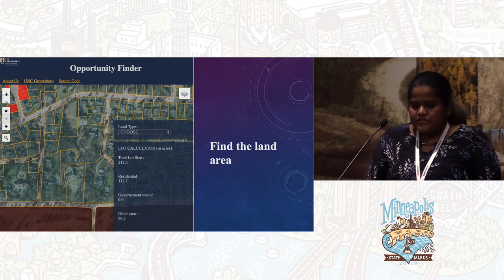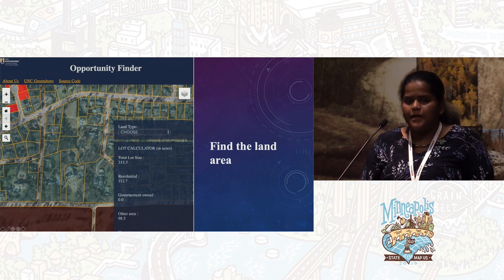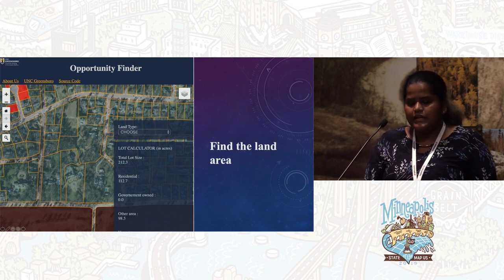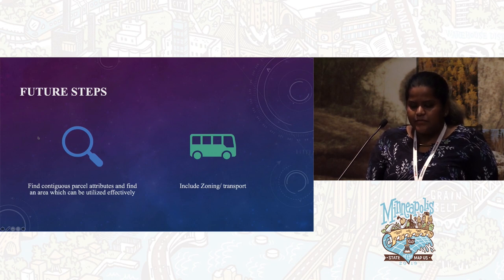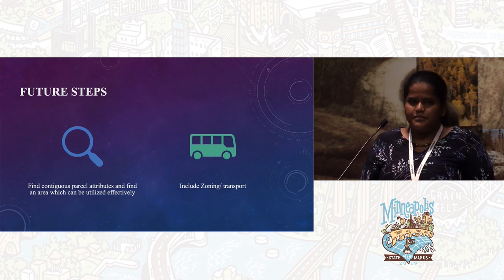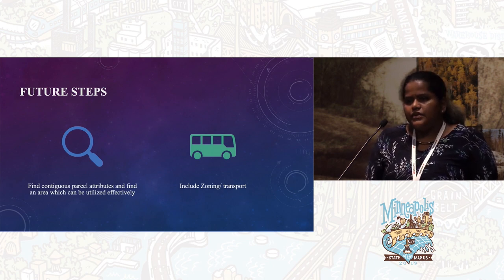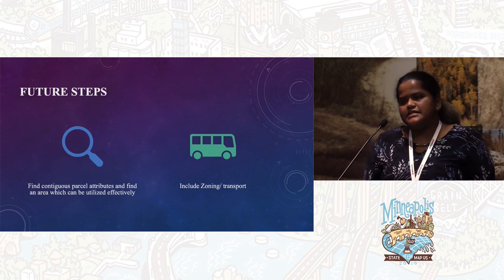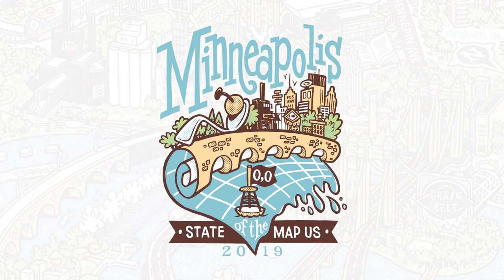This tool shows the vacant land area. In this web map, we can search the area or search using zip codes and find the vacant land area. In the future, we're planning to use contiguous parcel attributes — it's a work in progress. We're also planning to include zoning and transportation data to find out which places are more connected and where we can improve housing solutions in that area. That's all I have.